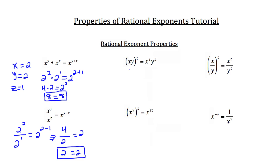Let's look at the next property. When we raise two numbers, x and y, to the same power, what ends up happening is you get x to the z times y to the z as well. For example, if x and y were 2 and 3 — so we have 2 times 3 in the parentheses — and z were equal to 2, that would be the same as writing 2 squared times 3 squared.